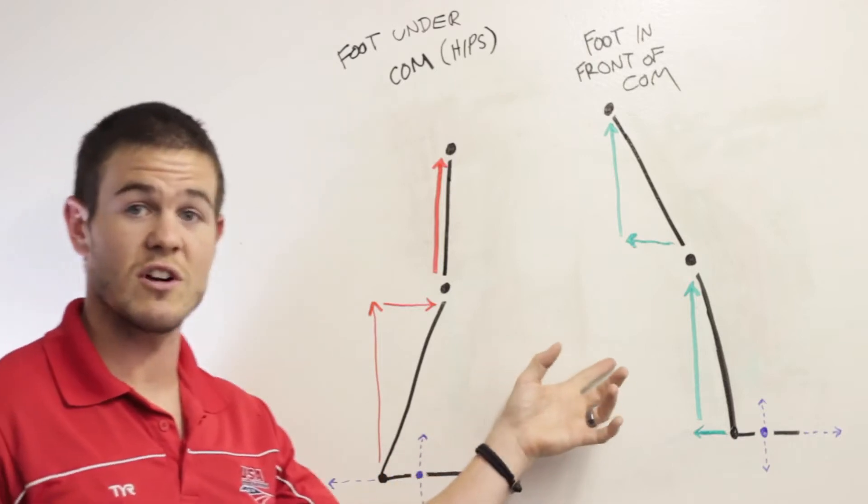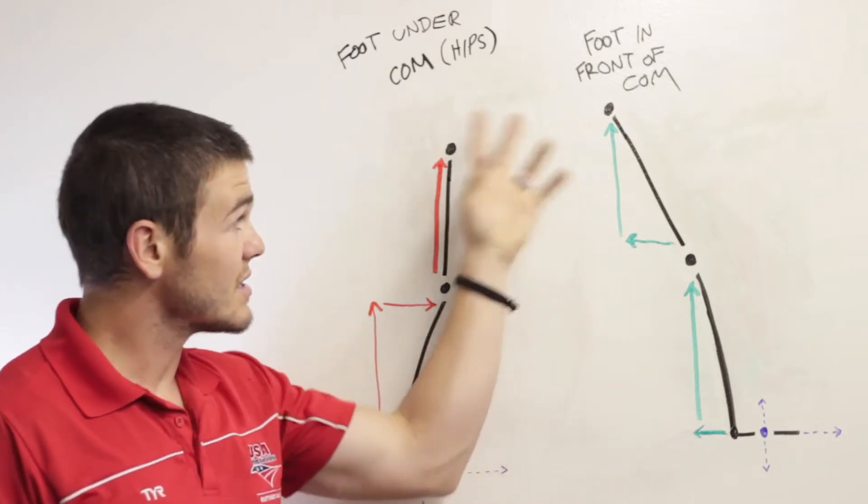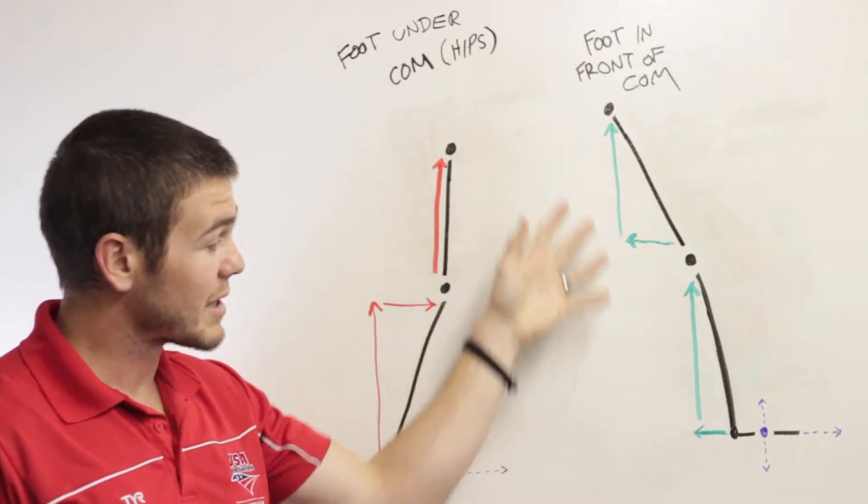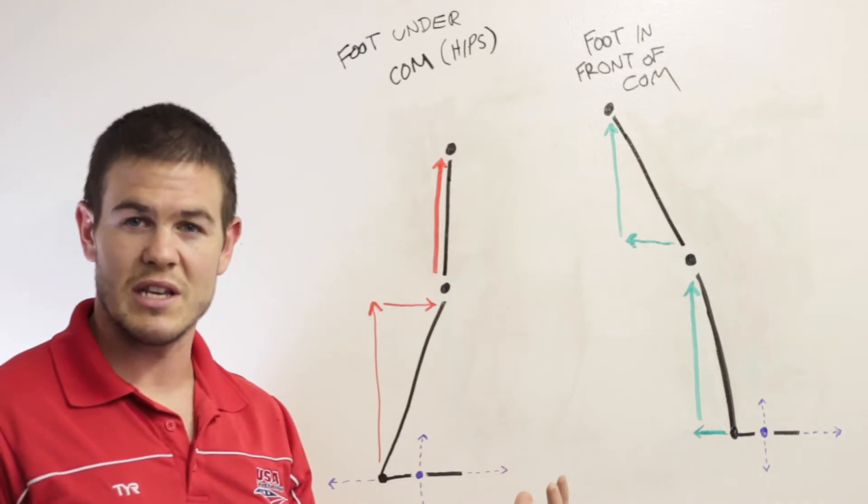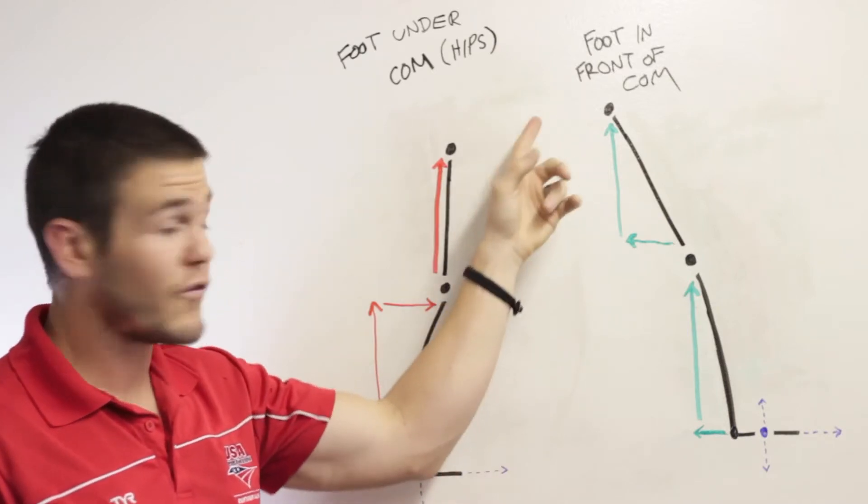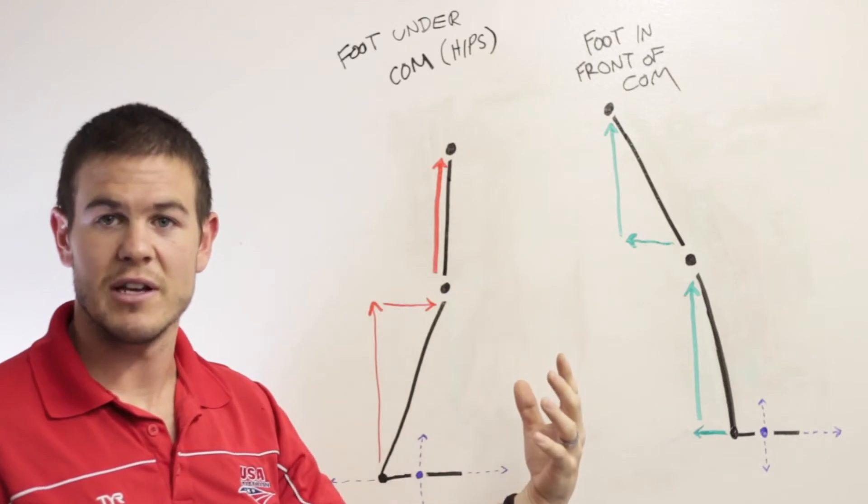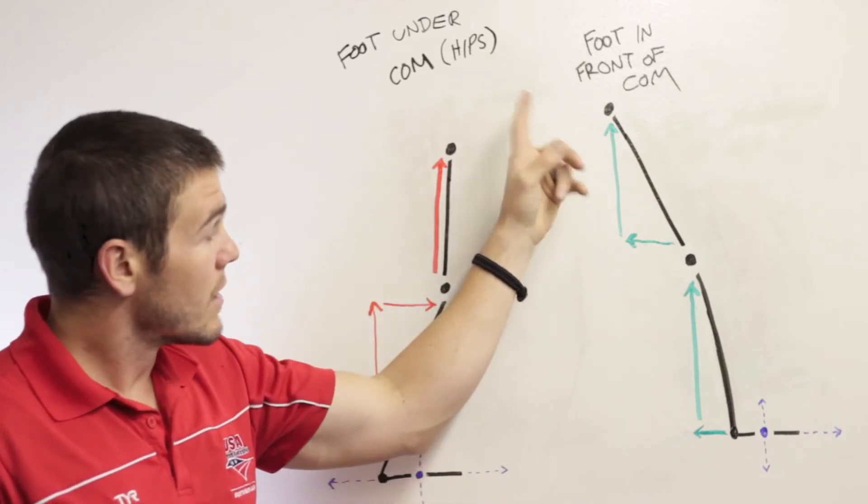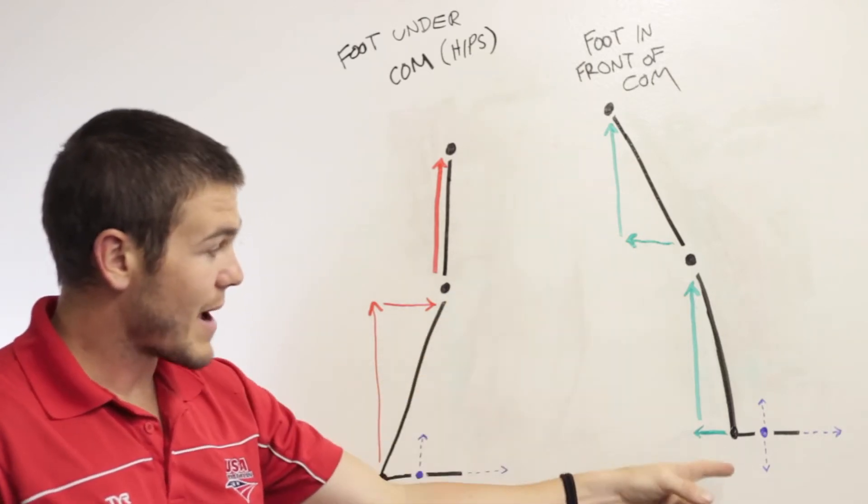So first I'll start with this one over here. This is the foot landing position of somebody who generally is a heel striker. Their foot is going to land out in front of their center of mass. Their center of mass is their hips, generally. So foot landing out in front of the center of mass.